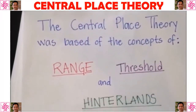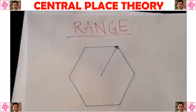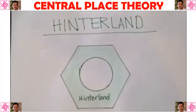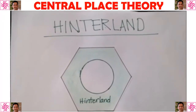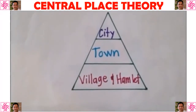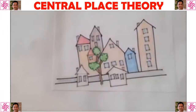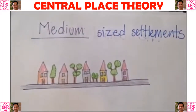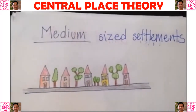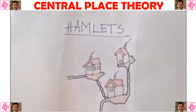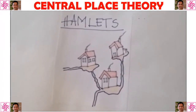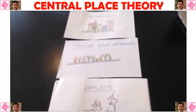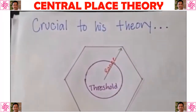Central Place Theory is based on the concepts of range, threshold, and hinterland. Range is the maximum distance people are willing to travel to use a service. Threshold is the minimum number of people needed to support a service. Hinterland is the area surrounding the city that interacts with the market. Due to the varying range of central goods and services, tertiary centers are arranged in an orderly hierarchy. Metropolises offer all services associated with central places and have large hinterlands. Medium-sized settlements have goods and services of villages and hamlets plus some of those cities offer. At the bottom are small market villages and roadside hamlets containing nothing more than a post office, service station, or cafe. Each high-rank central place offers all goods and services of the next lower-ranked place plus at least one or two more.